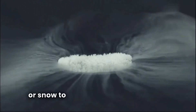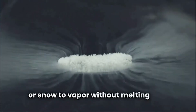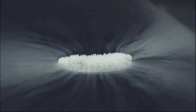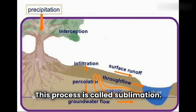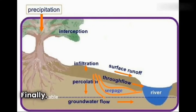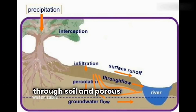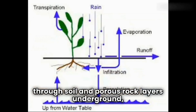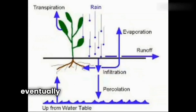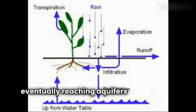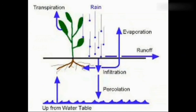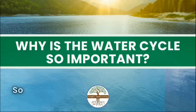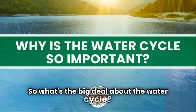Water can change directly from solid — as ice or snow — to vapor without melting first. This process is called sublimation. Finally, some water will percolate, or move through soil and porous rock layers underground, eventually reaching aquifers or becoming groundwater.